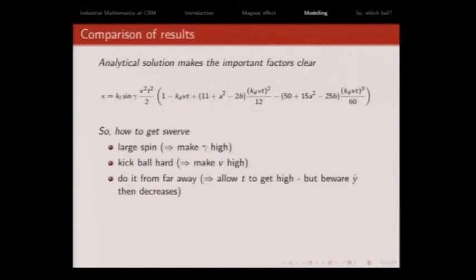Now from an analytical solution, I can say, what makes the ball move? The terms decrease in importance. My first term is the most important. How do I make the ball swerve? I put large amount of spin on it. So I make the spin axis high. That's the gamma. I kick it hard. This is a v squared. So the harder I kick it, the bigger effect it's going to have because of the squared in there. So I make the initial velocity high. That's where Roberto Carlos is coming in. He's kicking it as hard as he can to get that v high. He did it from a very long way away. You do it from far away to let t get high because you've also got this t squared term. But then the higher t gets, the slower the y velocities. Here I've got t squared. Here I've got something that's decreasing with t. So it's worth kicking it from a long way away.